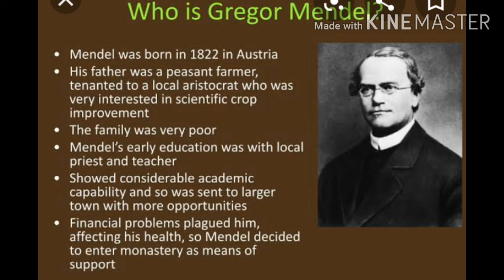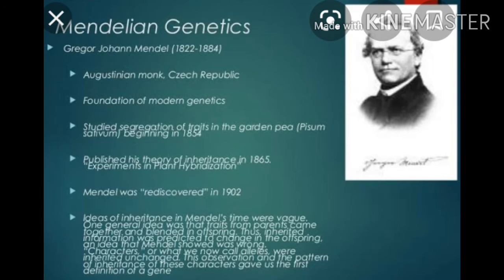Gregor Johann Mendel (1822–1884), the father of genetics, was born on 22nd July 1822. He received his school education in a monastery in Brno and took a two-year university course in philosophy. His original paper, 'Experiments on Plant Hybridization,' was published in the Proceedings of the Natural History Society in 1866.